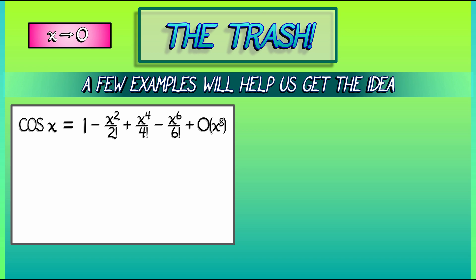Now, we could have said that cosine of x is 1 minus x squared over 2 factorial plus x to the 4th over 4 factorial minus x to the 6th over 6 factorial plus big O of x to the 7th. And that would have been perfectly fine. That's a true statement, a bit less precise than saying big O of x to the 8th. But nevertheless, true.